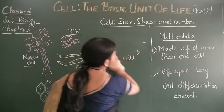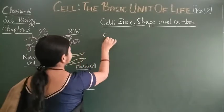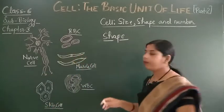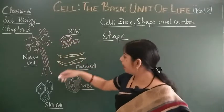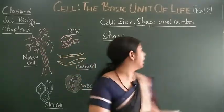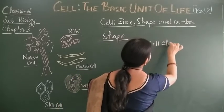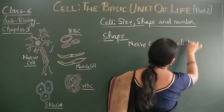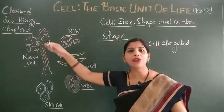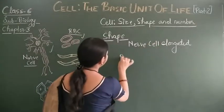Now let's see the last topic of today's video — the shape of cells. Look at the shape of the cells I have drawn here. This is the nerve cell, and as you can see, the nerve cell is elongated in shape.